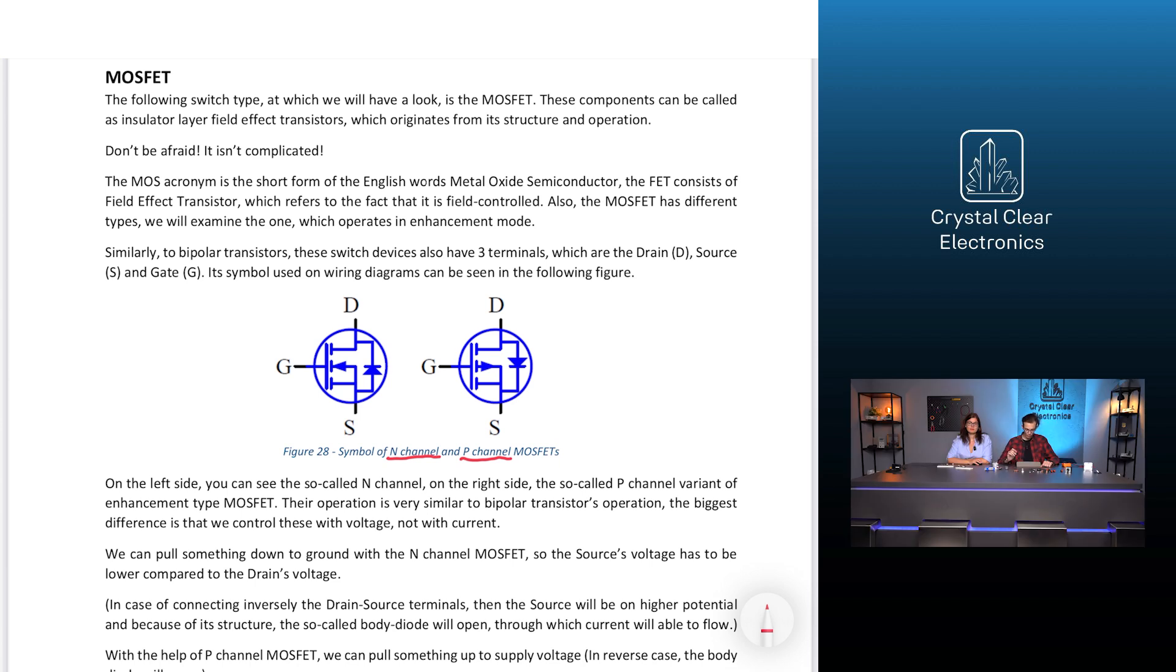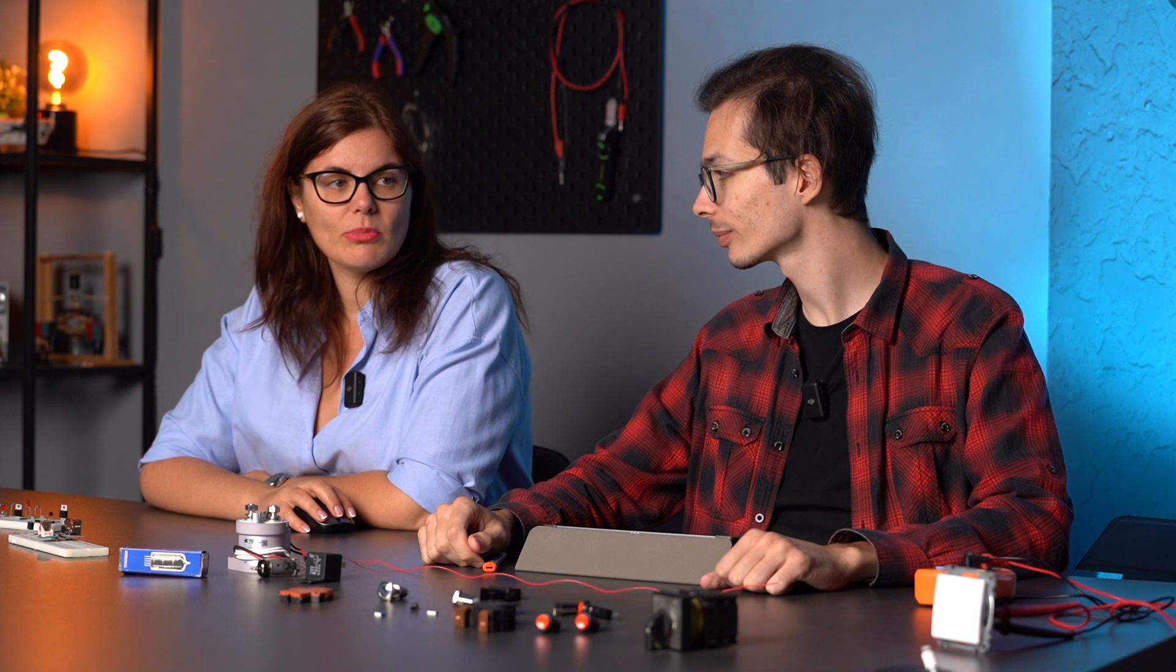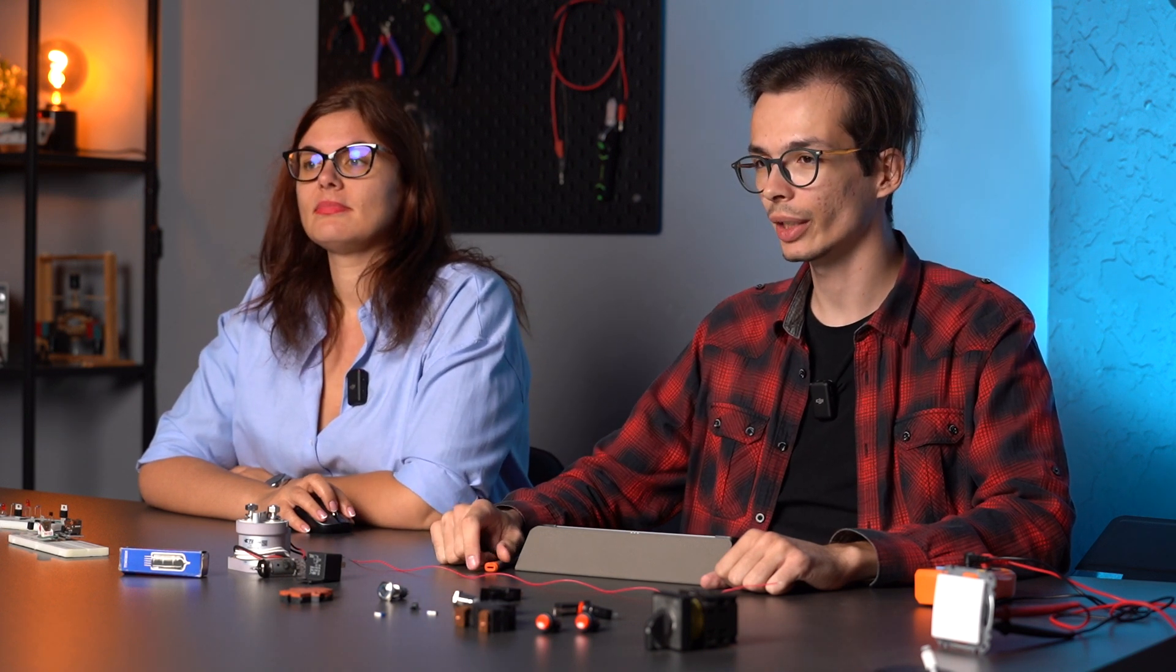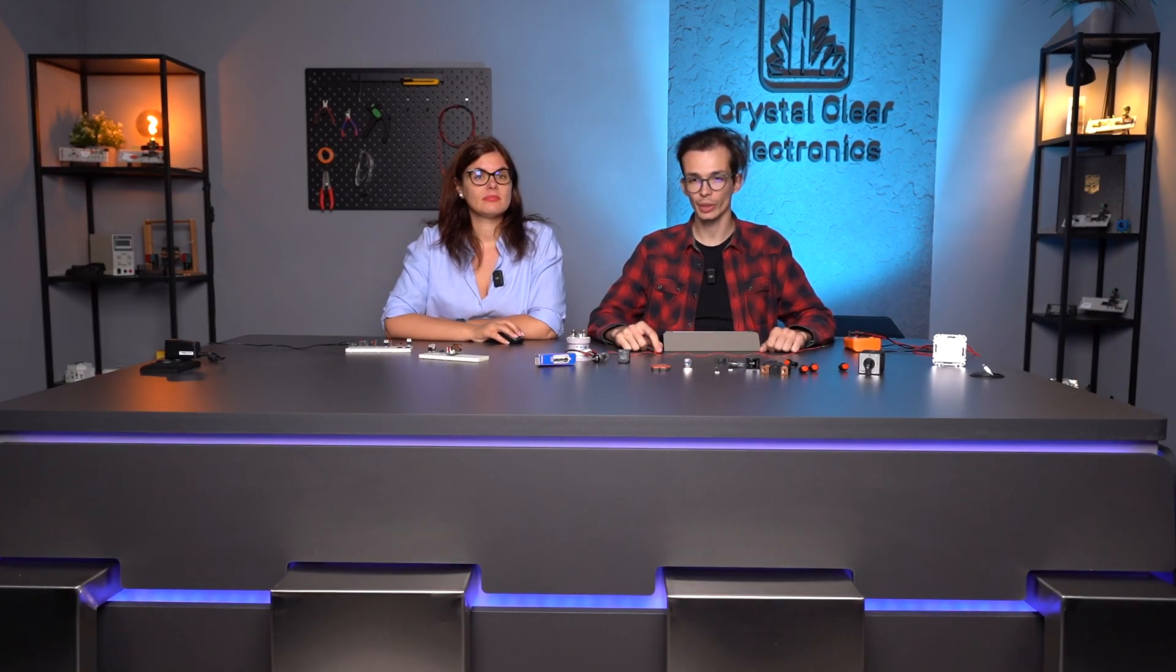Their operation is very similar to bipolar transistors operation. Can you explain the difference between the two? The biggest difference is that we control these with voltage and not with current. We can pull something down to ground with the N-channel MOSFET, so the source's voltage has to be lower compared to the drain's voltage.